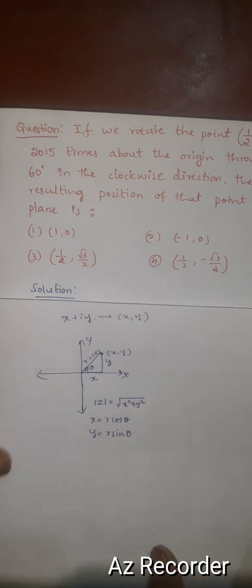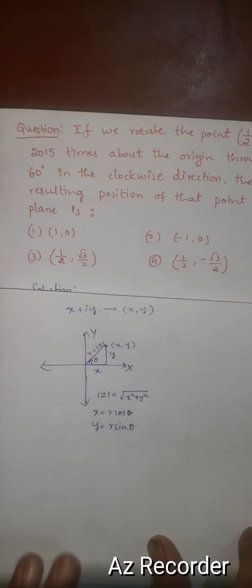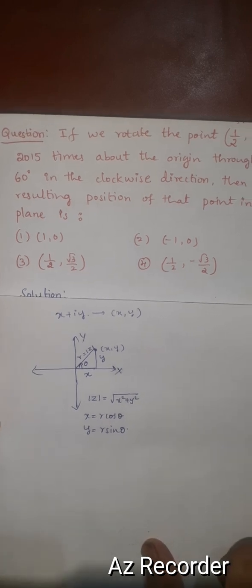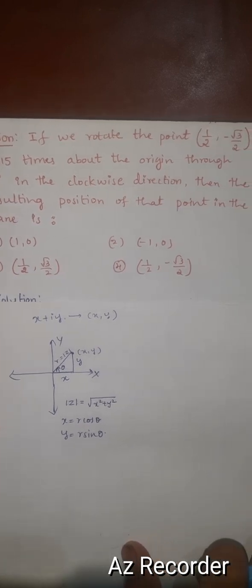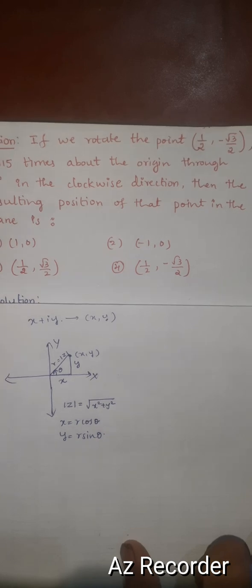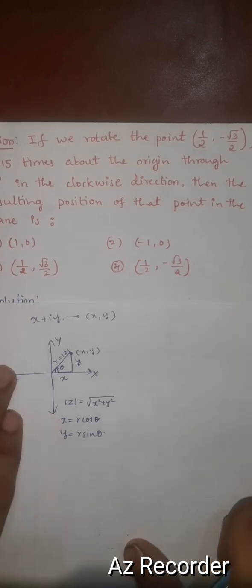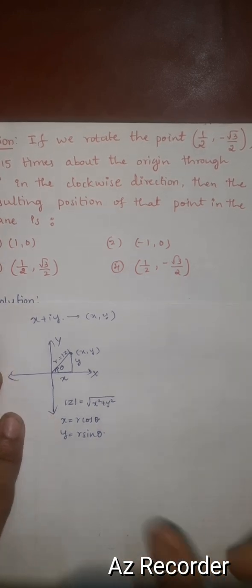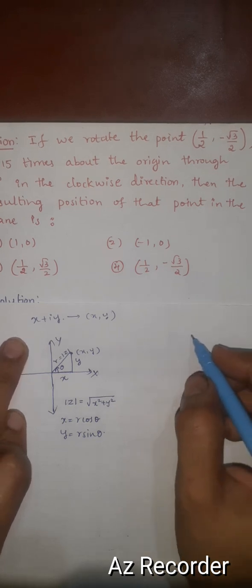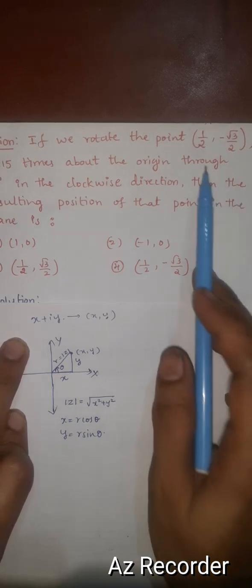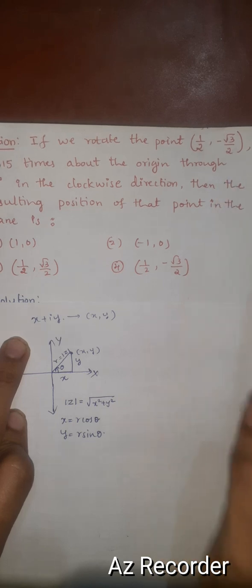Similarly, we represent the given point. The given point is (1/2, -√3/2). The point lies in the fourth quadrant because the x-coordinate is positive and the y-coordinate is negative.